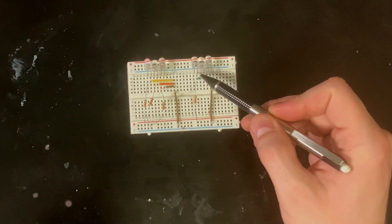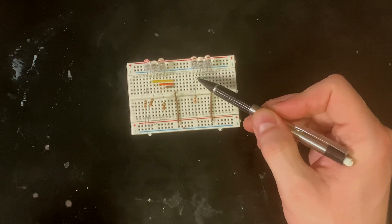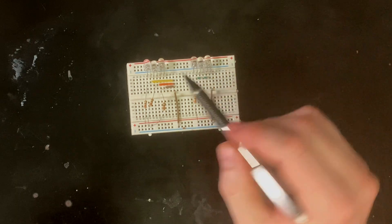For series, we go positive to negative, positive to negative, positive to negative, and then the negative gets bussed down to the bottom rail, and the positive only goes through one resistor.